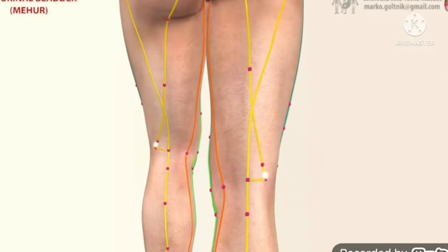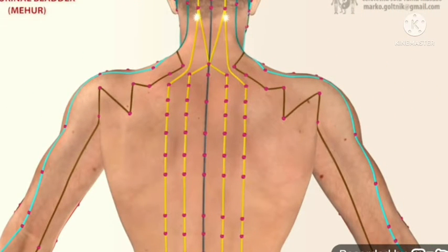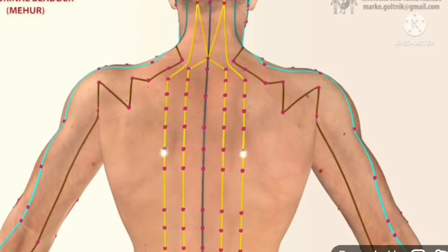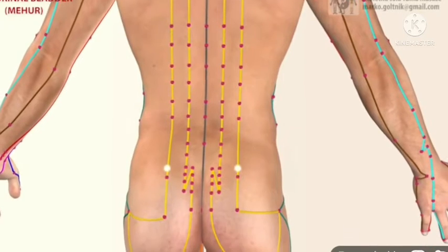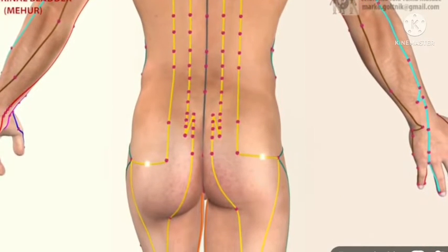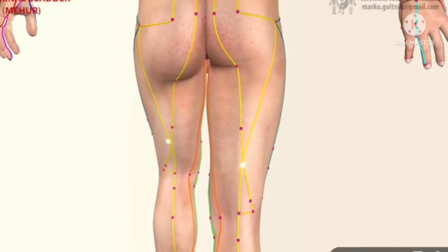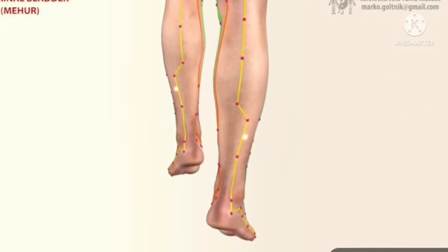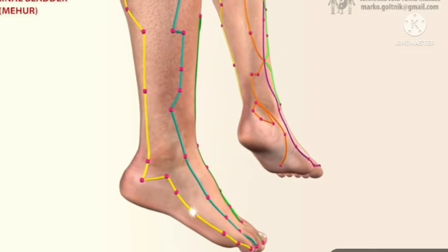Then from here it returns back at the top, and from here the UB meridian again flows down. It goes straight till our toes. It is the longest meridian with 67 points and it ends at our last toe.